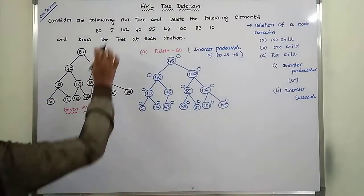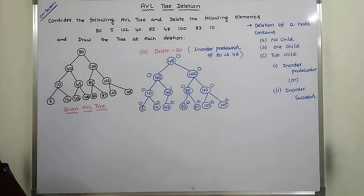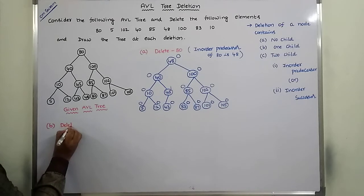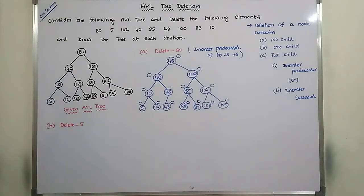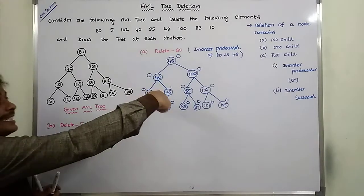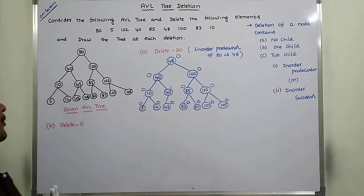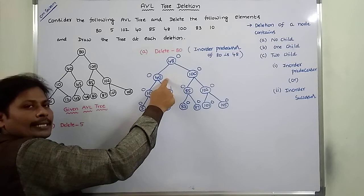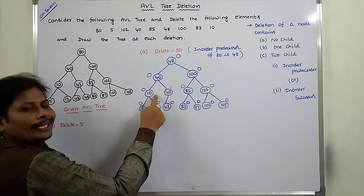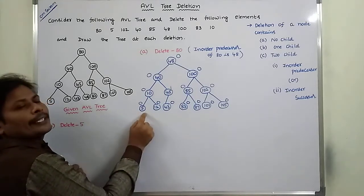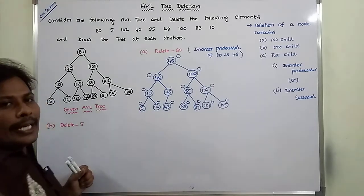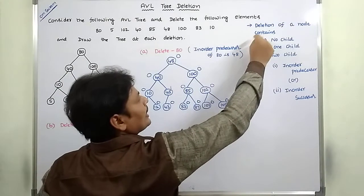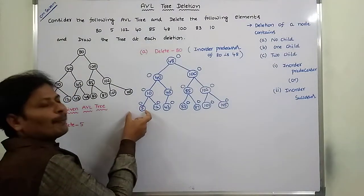Next, we have to delete element 5 from this existing tree. First we have to check the location of element 5 in this tree. 5 is compared with 48 — 5 is less than 48, go to the left subtree. 5 is compared with 40 — it is lesser, go to the left subtree. 5 is compared with 10 — it is lesser, go to the left subtree. 5 is compared with 5 — they are equal, our deleted node is found. The deleted node has no left child and no right child, meaning the deleted node has no children. So we simply delete that node.